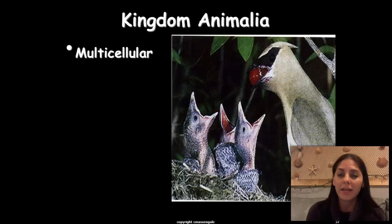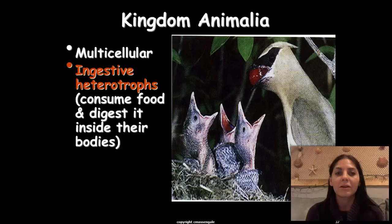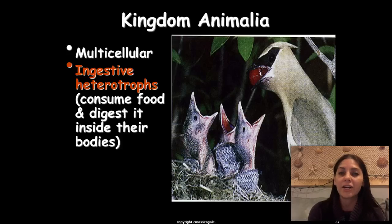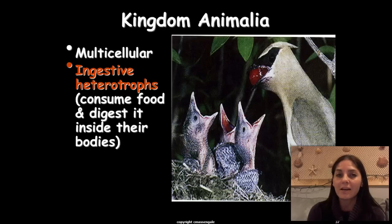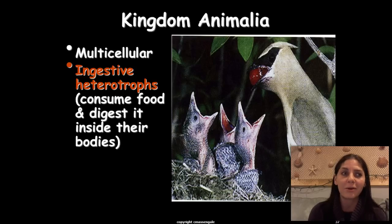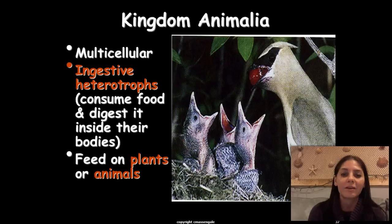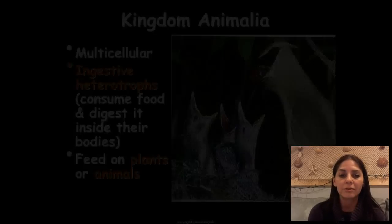Kingdom Animalia — this is where we belong. Animals are multicellular and are ingestive heterotrophs, meaning we ingest our food, consume it, and digest it inside our bodies — unlike fungi, which break down food outside their bodies. Animals feed on plants or other animals.